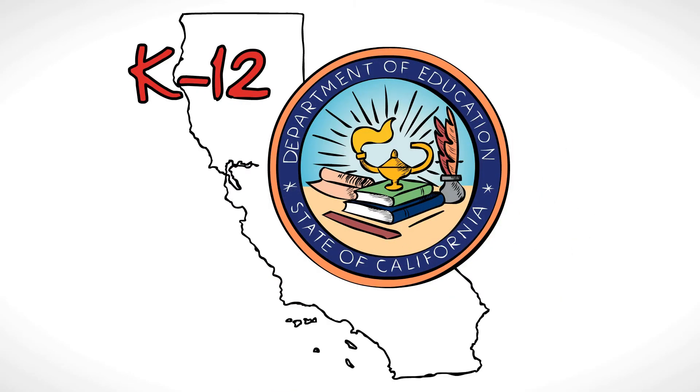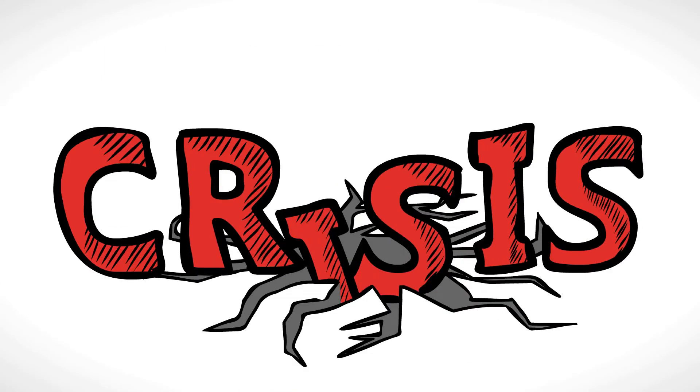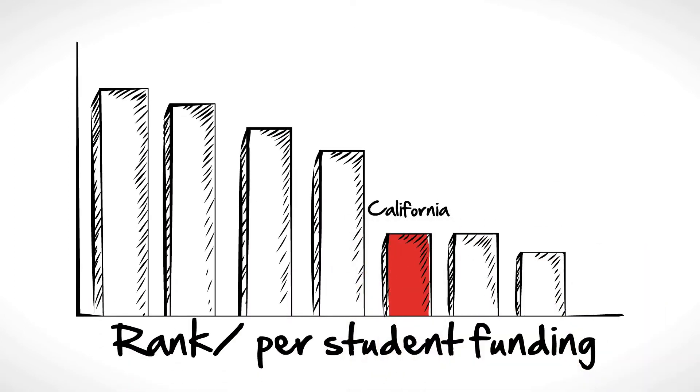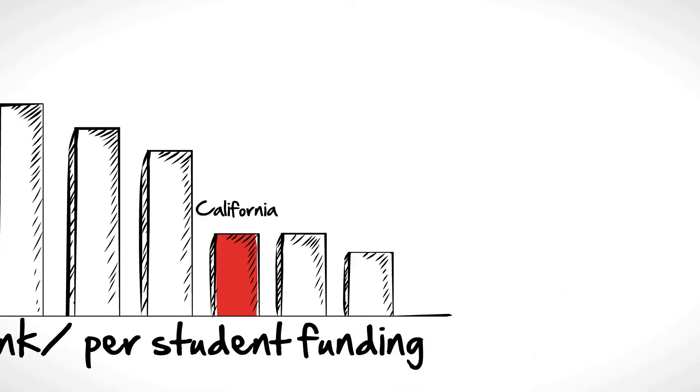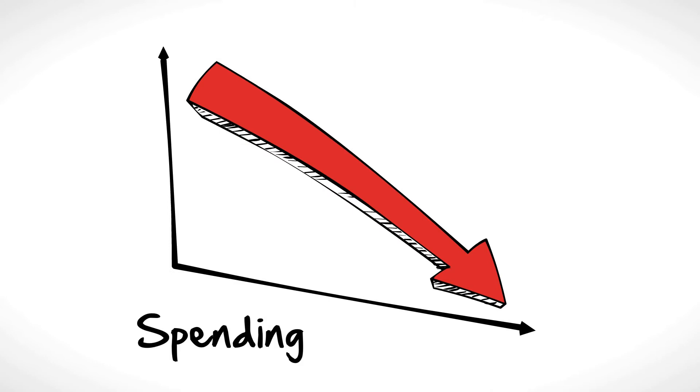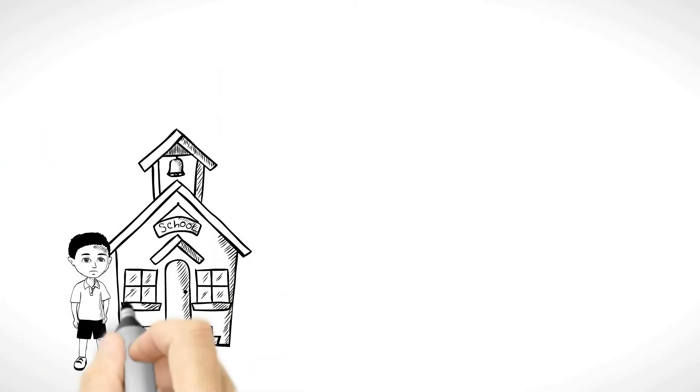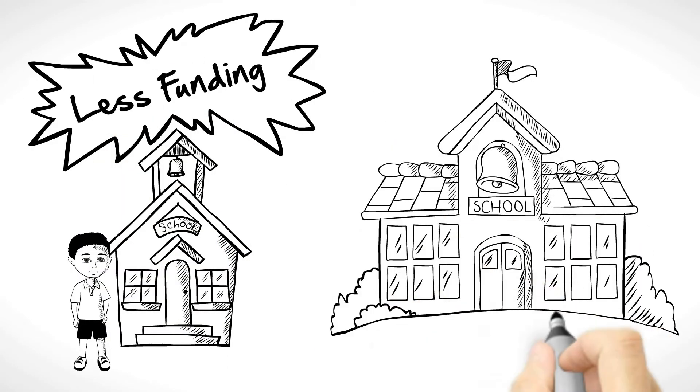K-12 education in California is in crisis. Not only does California rank near the bottom in per-student funding, and spending has been drastically cut, but students in low-income schools receive less funding than kids in well-to-do neighborhoods.